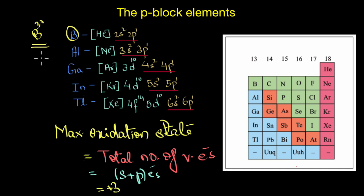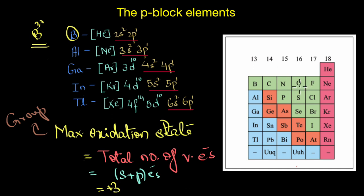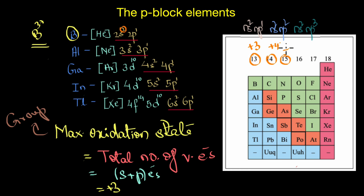This maximum oxidation state for a particular group is also called its group oxidation state, and every group has its own specific group oxidation state depending on the number of valence electrons. For group 13 it is +3, for group 14 it would be +4 (two s-electrons and two p-electrons), and for group 15 the group oxidation state would be +5 (two s-electrons and three p-electrons), and so on.